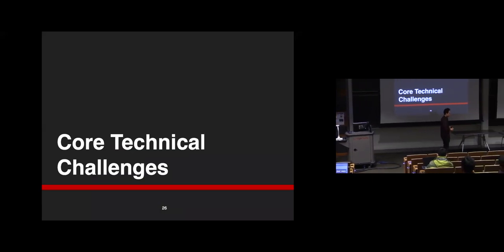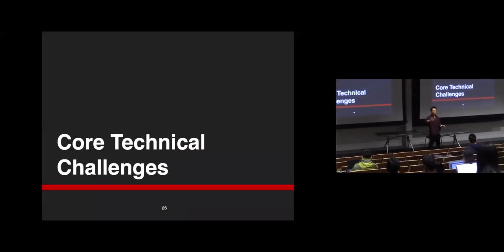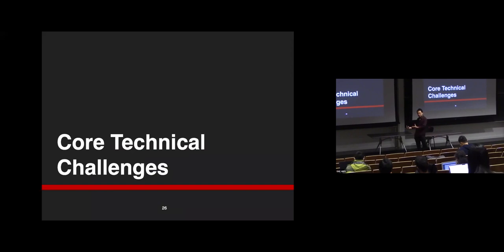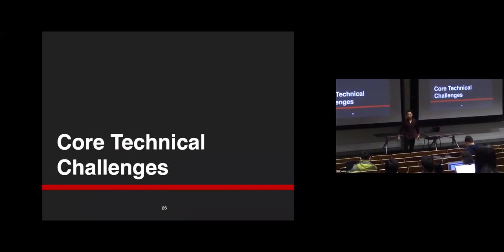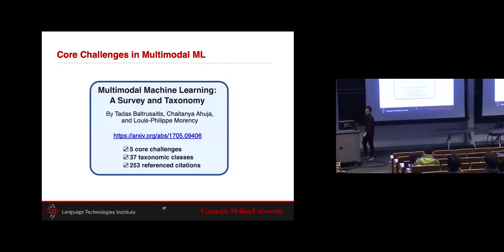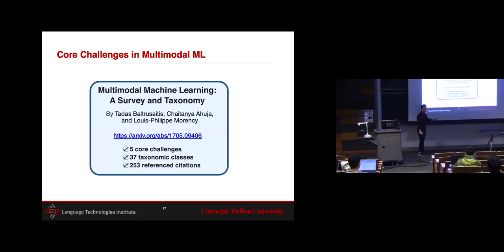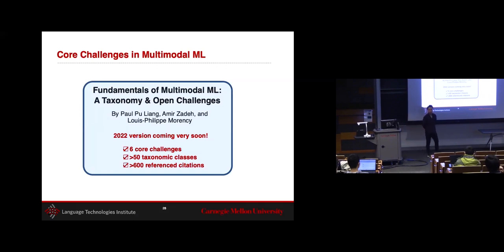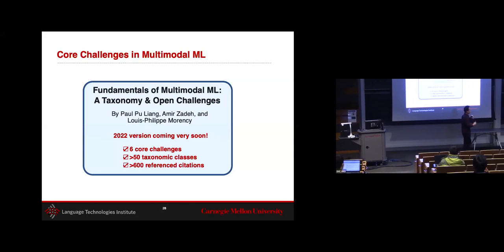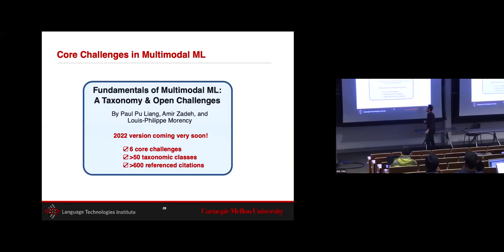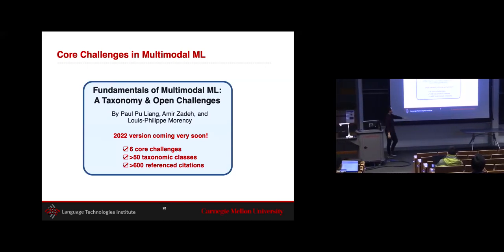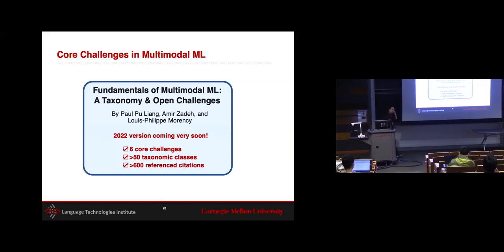Now I want to go into the core technical challenges of multimodal learning. These challenges have been distilled to be as distinct from traditional ML as possible — specifically unique to the study of multimodal data. They were outlined in a survey paper by LP's postdoc about five years ago covering five core challenges, and there's a very new survey coming up led by myself with those five challenges plus a new one, with a much larger set of citations and taxonomies.